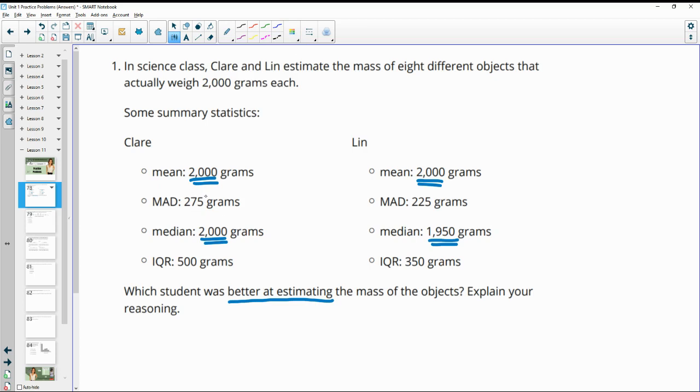But once we start looking at the variability of the data, the mean absolute deviation for Claire was 275 versus Lynn's was 225. This means that Lynn's data, the deviation of the data was closer to the mean than Claire's was. Hers were spread out further with much higher and lower numbers than 2,000 included in her data. And then also the interquartile range for Claire is 500 versus Lynn's is 350. So that means that Lynn's data was closer together to this median than Claire's was.